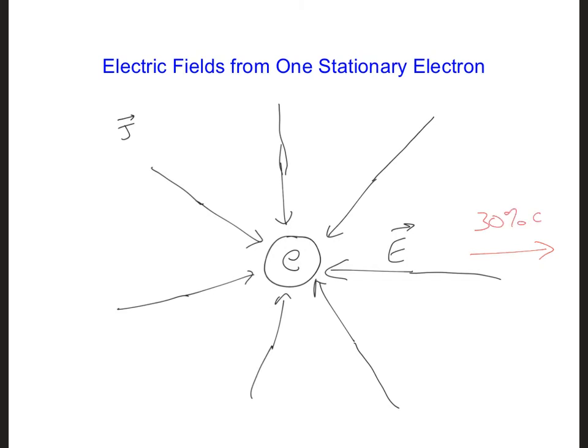How would the electric field from a moving electron, 30% of the speed of light, look, compared to the one that's stationary here on this slide? How would they be different from each other? You can pause the video if you like.